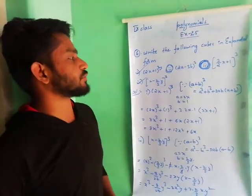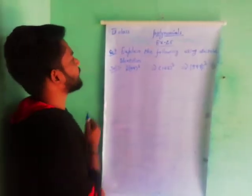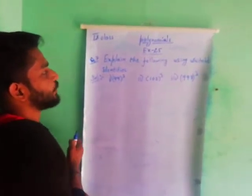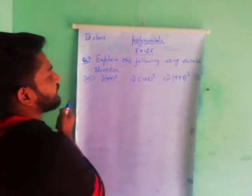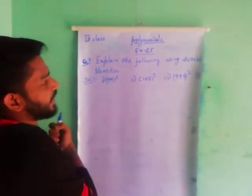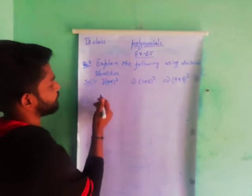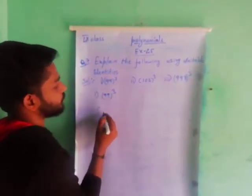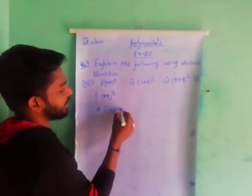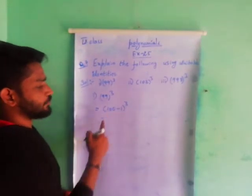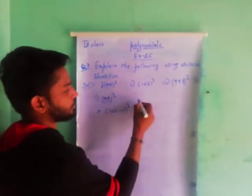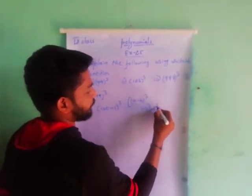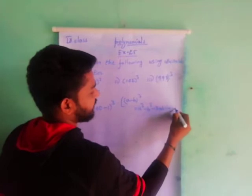Second and third one, do your homework in classwork. Coming to the seventh question: evaluate the following using suitable identities. We have to expand the given numbers. The first one is 99 whole cube. So 99 can be written as (100 - 1). It will look like (a - b) whole cube. The formula is: a cube minus b cube minus 3ab into (a - b).